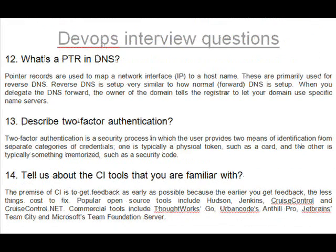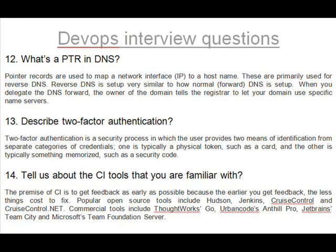Question 12: What's a PTR and DNS? Pointer records are used to map a network interface (IP) to a host name. These are primarily used for reverse DNS. Reverse DNS is set up very similar to how normal forward DNS is set up. When you delegate the DNS forward, the owner of the domain tells the registrar to let your domain use specific name servers.